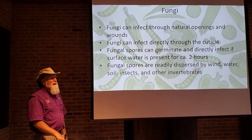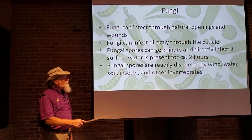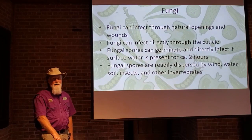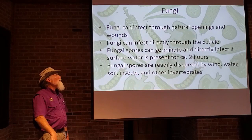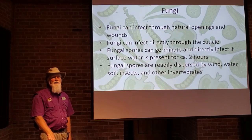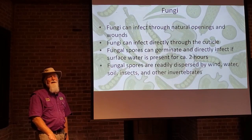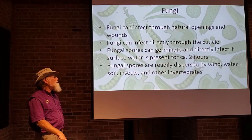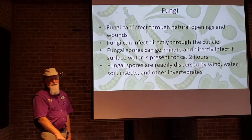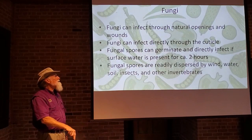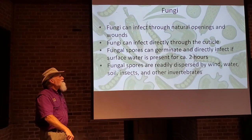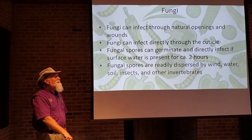Fungal spores that land on a plant — if conditions are right and they have about two hours of surface water — will germinate and directly penetrate the plant tissue. Once it's in there, you have an infection. That's another reason we talk about the way you irrigate plants as a control mechanism: if you keep the leaves dry, those fungal spores cannot infect your plant.